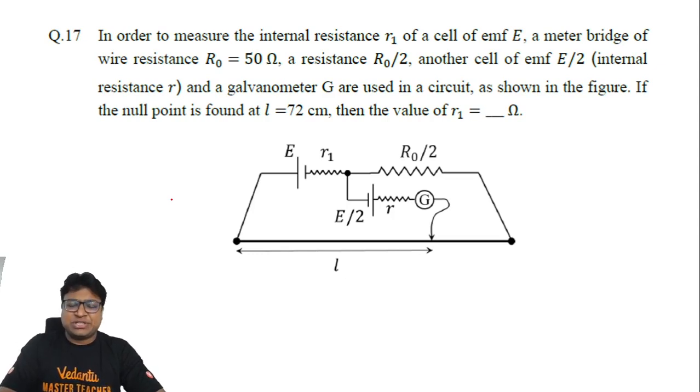Hello students, this is question number 17 of Paper 2 Physics 2021 JEE Advanced. Let's see the question. It looks straightforward. It says that in order to measure the internal resistance r1, that means this value of a cell of emf E, a meter bridge of wire resistance 50 ohm, so this entire wire is having resistance of 50 ohm.